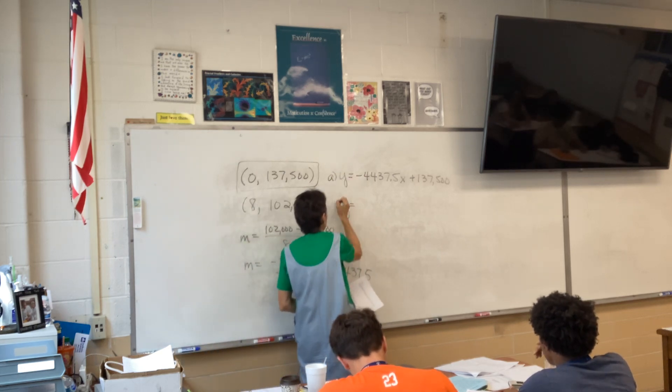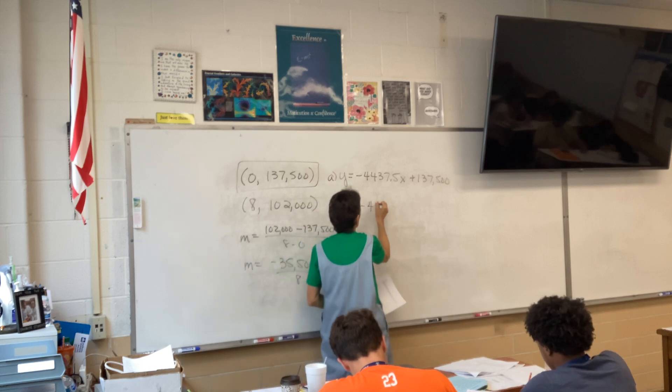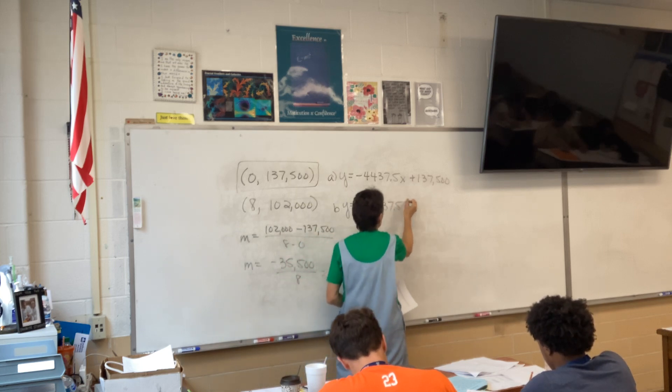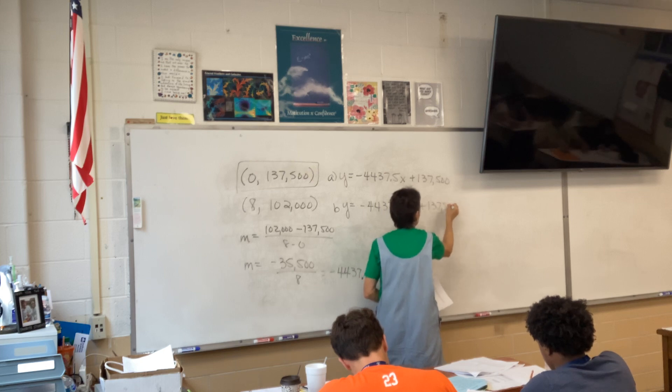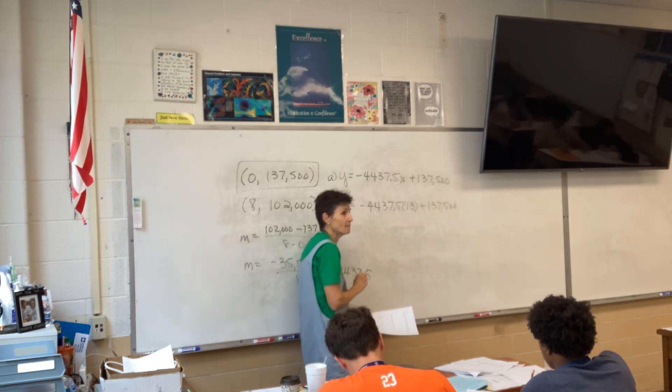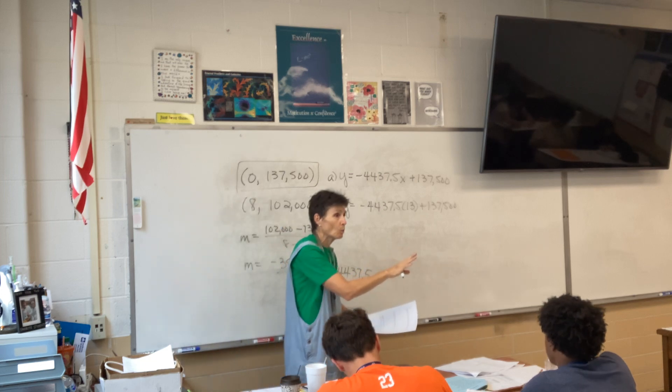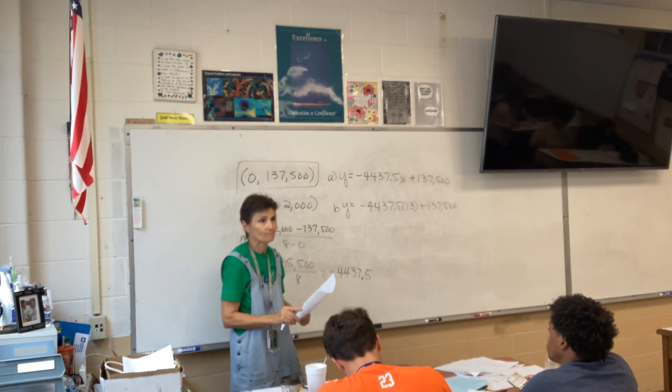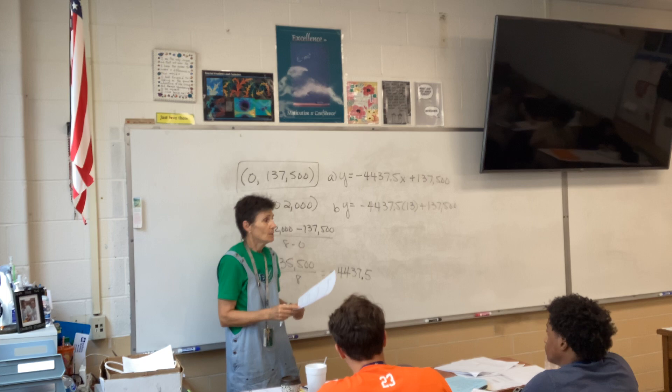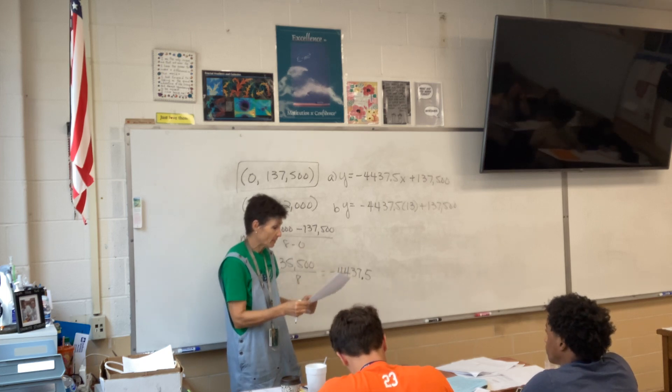When or what will the building be worth 13 years after it was purchased? So now we just put 13 in. So this is the answer to A. The answer to B is negative 4,437.5 times 13 plus 137,500. Does that make sense to everybody? That's the answer to the question.